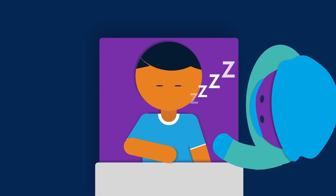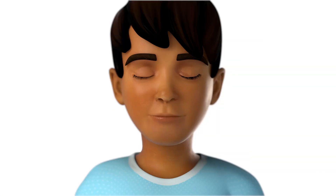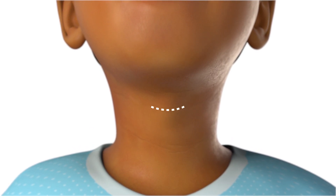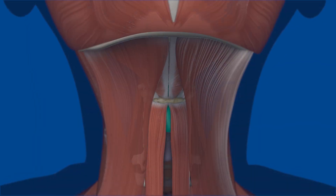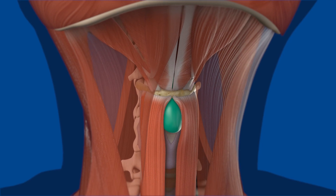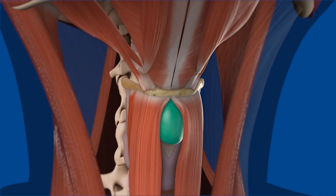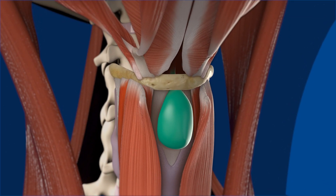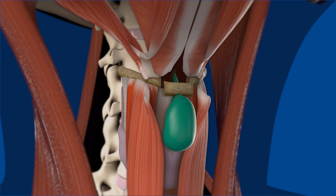After your child has fallen asleep, the surgery begins. The surgeon will make a small cut in the skin along a fold in the neck to help hide any scarring. Once inside, the surgeon will find the cyst, which can be stuck to the hyoid bone. The hyoid bone and cyst are dissected free from the neck muscles, and the middle of the hyoid bone is cut and removed along with the attached cyst.